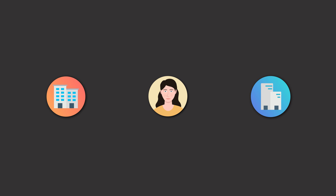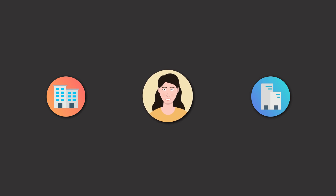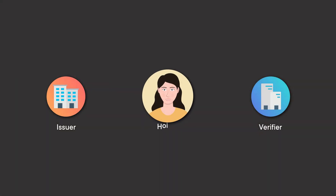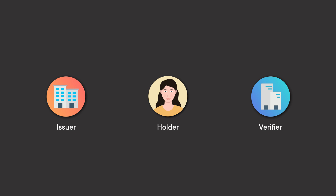One thing that really stands out here is the difference in roles. We have someone in the middle that is the center of this transaction that the information relates to. Traditionally we've had the concept of issuers — people who are creating the information and sending it out — and verifiers, or relying parties, who take that information and use it in their context. Now in the decentralized model we're introducing a third role, the holder — the person who is the subject of the information the credential holds — putting them in a real active position as part of that transaction model.